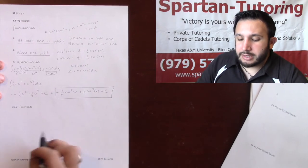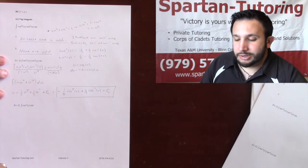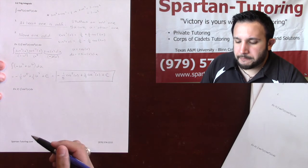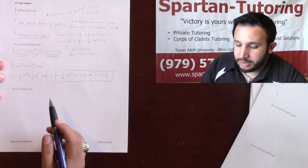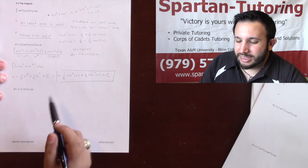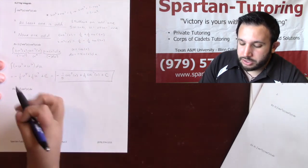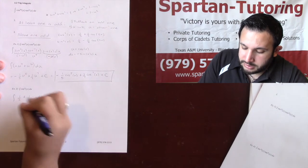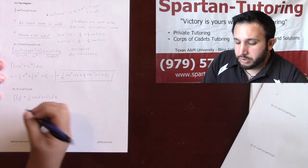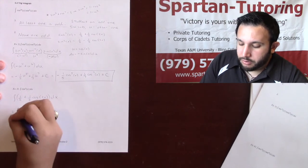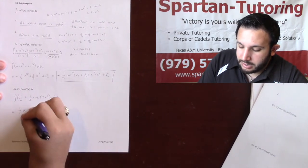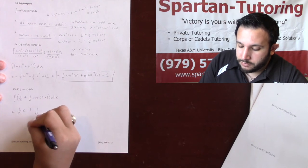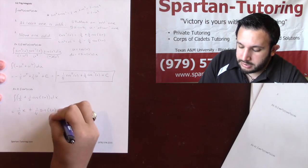That's it — that's how you deal with the case when at least one power is odd: pull out the odd one, do a u-sub, set u equal to the other one. Now, what about cosine squared? If I want to take the integral of cosine squared x, you can't integrate it directly — that's why you need the identity. Replace cosine squared with one-half plus one-half cosine 2x. Then integrate: the integral of one-half is one-half x, and the integral of one-half cosine 2x is one-fourth sine 2x plus C.